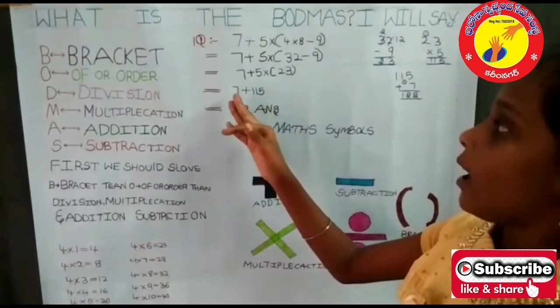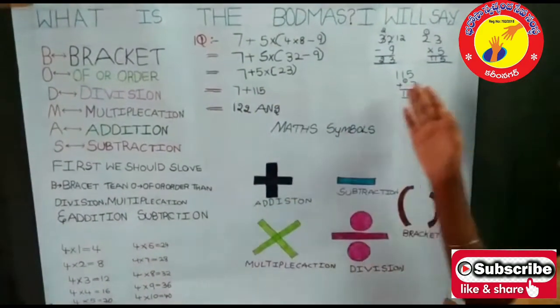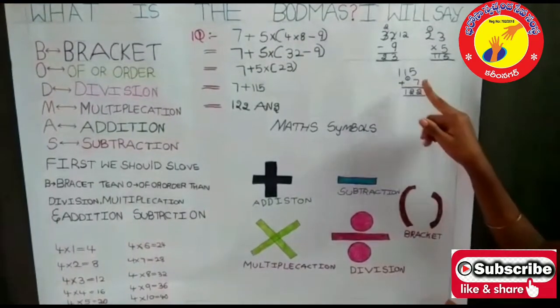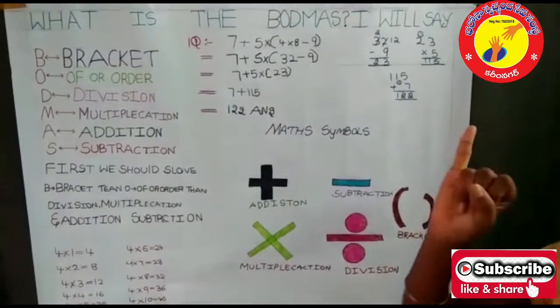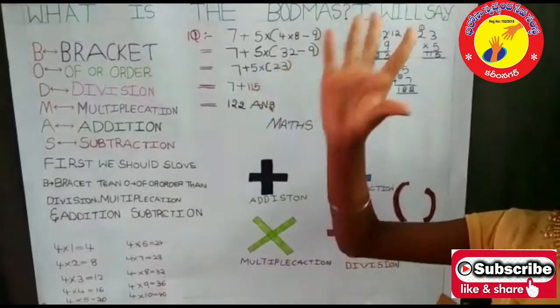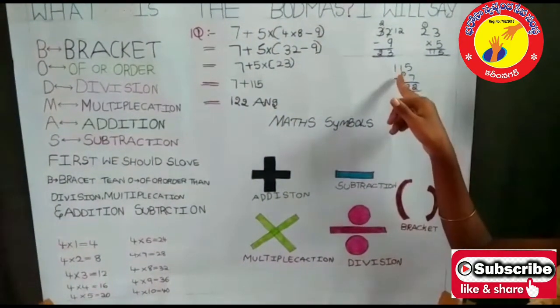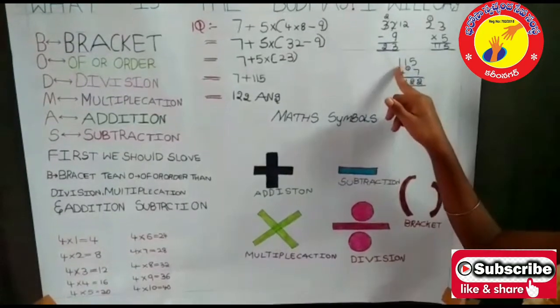Then 7 plus 115 here we should do. So 115 plus 7. So 7 plus 5, 8, 9, 10, 11, 12. So 2, 1 carry. So 1, 1. 1 plus 1, 2. So 2 here, 1 down.